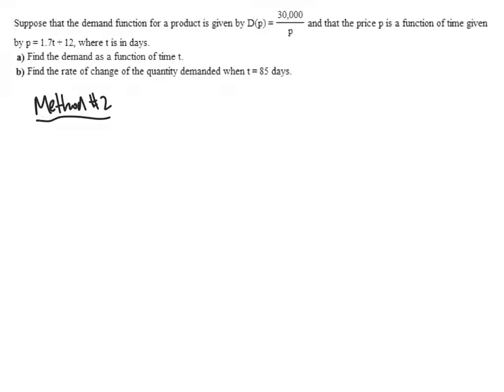Because the chain rule says that the derivative of demand with respect to time is equal to the derivative of demand with respect to price times the derivative of price with respect to time. And the derivative of demand with respect to price, that's pretty easy to figure out, because our formula for demand as a function of price is 30,000 divided by p,